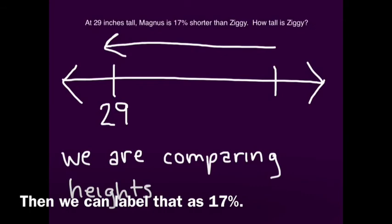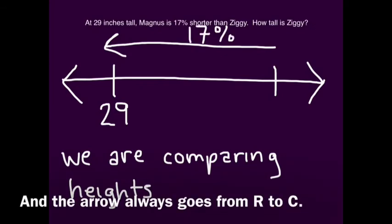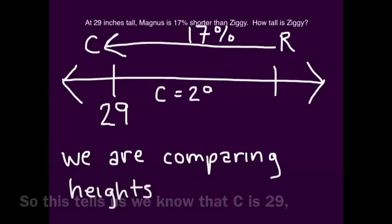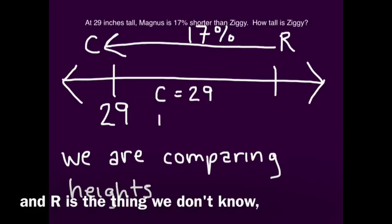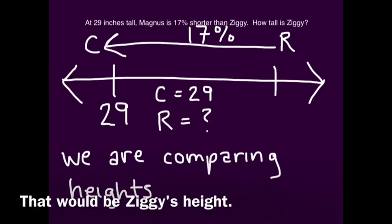We label that as 17%. The arrow always goes from R to C. This tells us that C is 29, and R is the unknown we're solving for — that would be Ziggy's height.